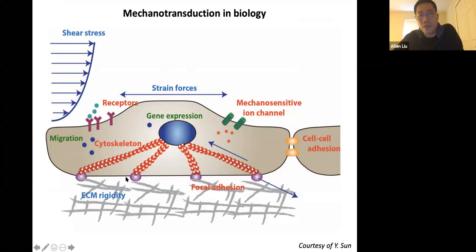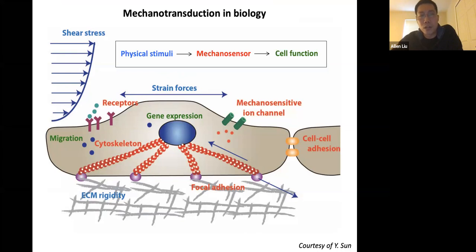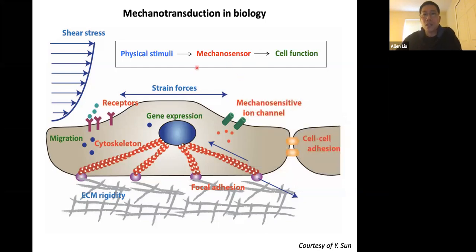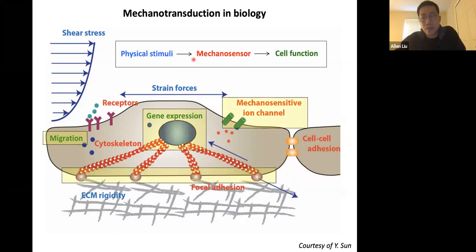This is a depiction of a paradigm in mechanobiology where you have different types of mechanical forces — shear stress, stretch forces, extracellular matrix rigidity — and these all impact cell function. The cell functions we're primarily interested in are cell migration and endocytosis. In the middle, the mechanosensor is something that is relatively unknown from a research standpoint. We're interested in how these mechanosensors actually sense mechanical and physical stimuli and ultimately govern cell function.